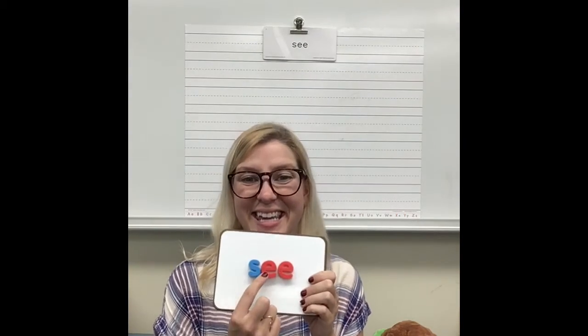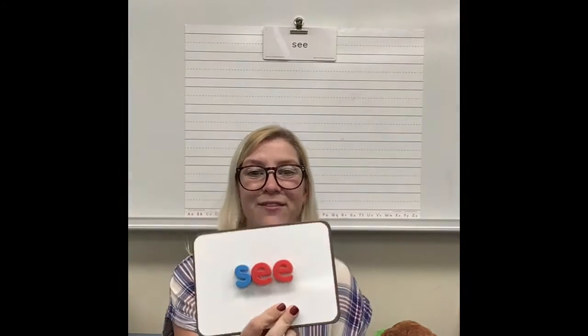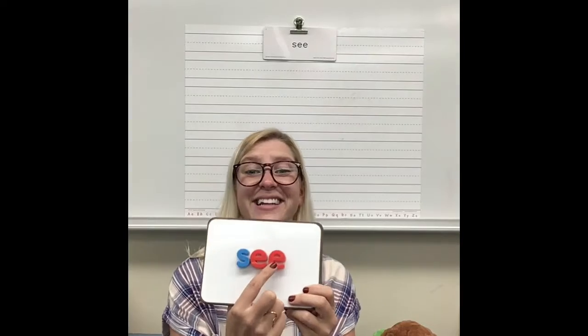This is the word 'see.' We need S, E, E to spell 'see.' Spell it with me — let's spell it like a spooky ghost: S, E, E — see. Can you find the vowels in 'see'? E and E. There are two vowels in 'see.' They're both E.